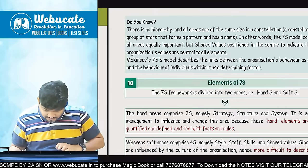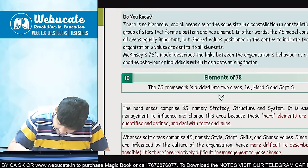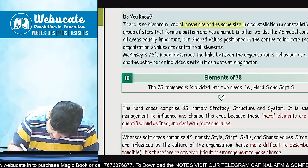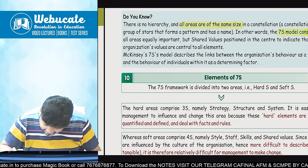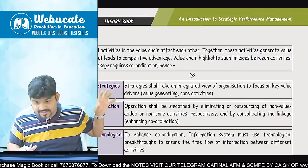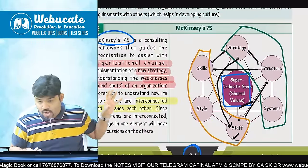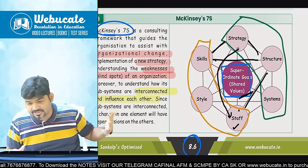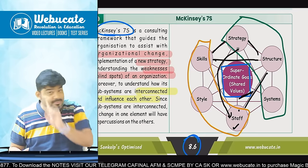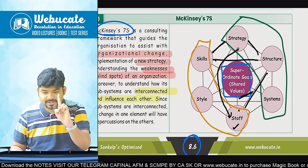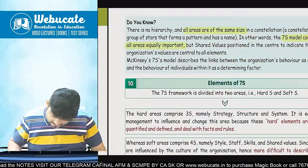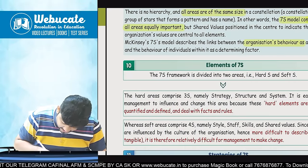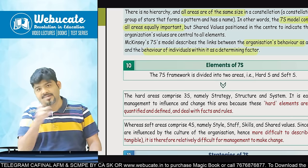There is no hierarchy in the 7S model — this can come in your MCQ. All areas are of the same size; in other words, all areas are equally important — skills, style, staff, strategy, structure, system, and shared values — everything is equally important. The 7S framework also describes the link between the organization's behavior and the behavior of individuals within the organization.